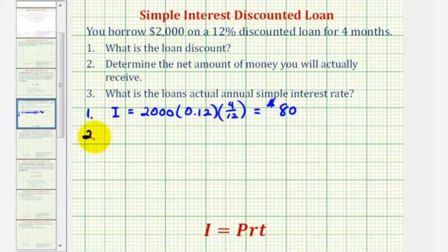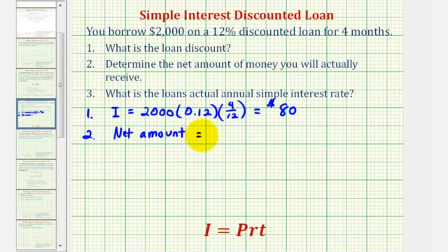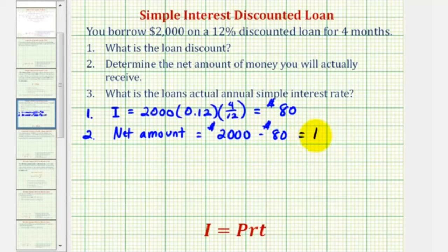For number two, to determine the net amount of money that you will actually receive, if there are no other fees, the net amount is the loan amount of two thousand dollars minus the discount of eighty dollars. So you actually receive one thousand nine hundred twenty dollars for this discounted loan.